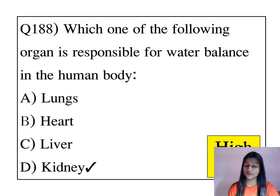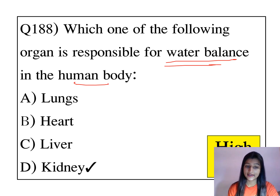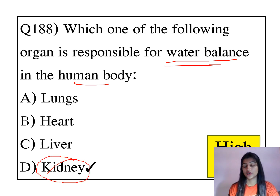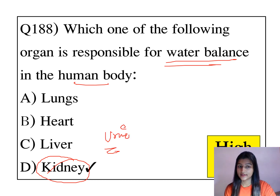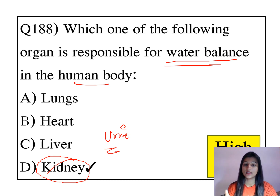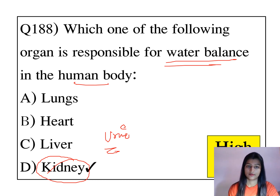Which one of the following organs is responsible for water balance in the human body? Kidney is responsible for the water balance. Urine is produced in the kidney, so you can relate — water balance in the human body, kidney is responsible for it.